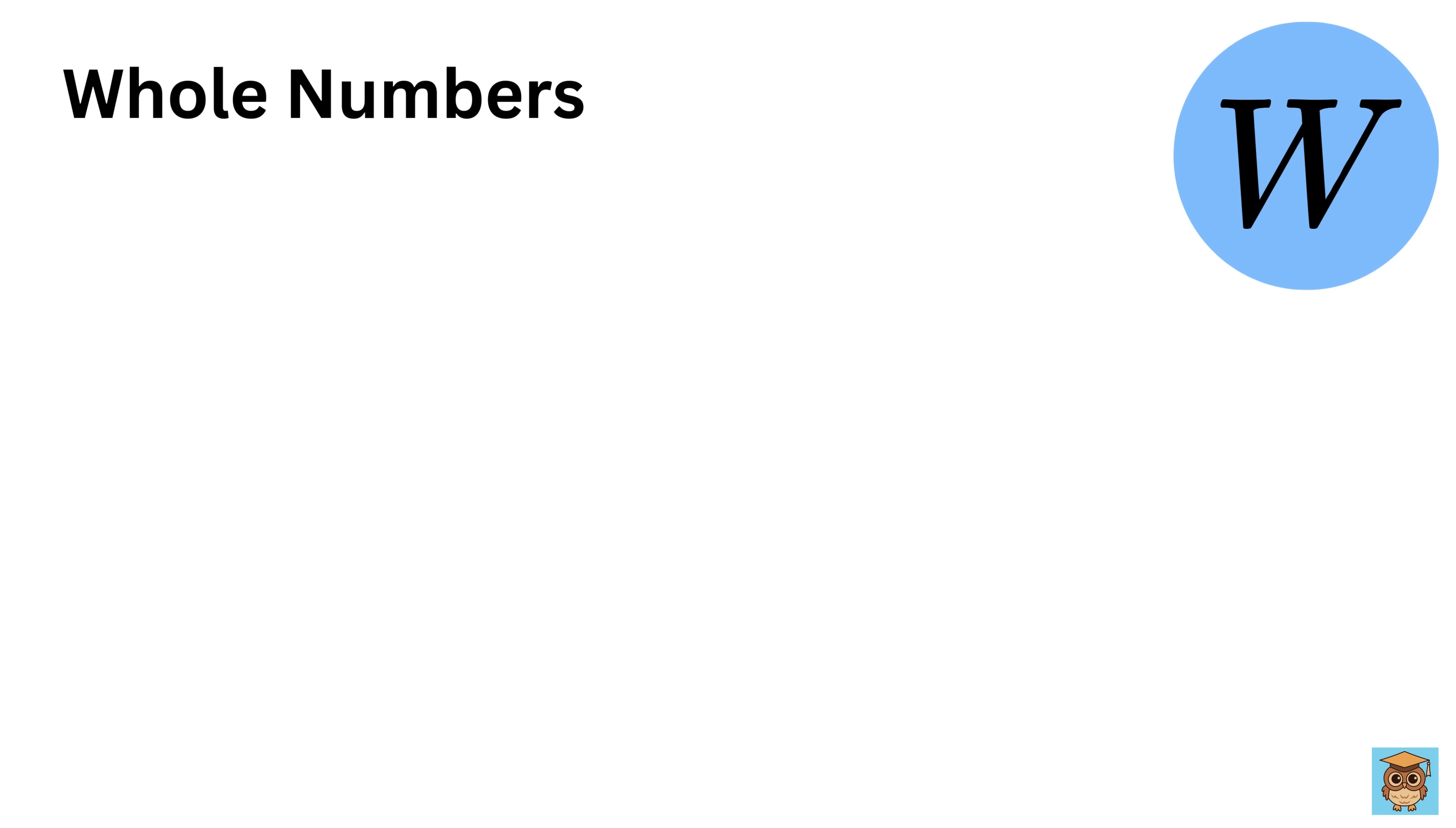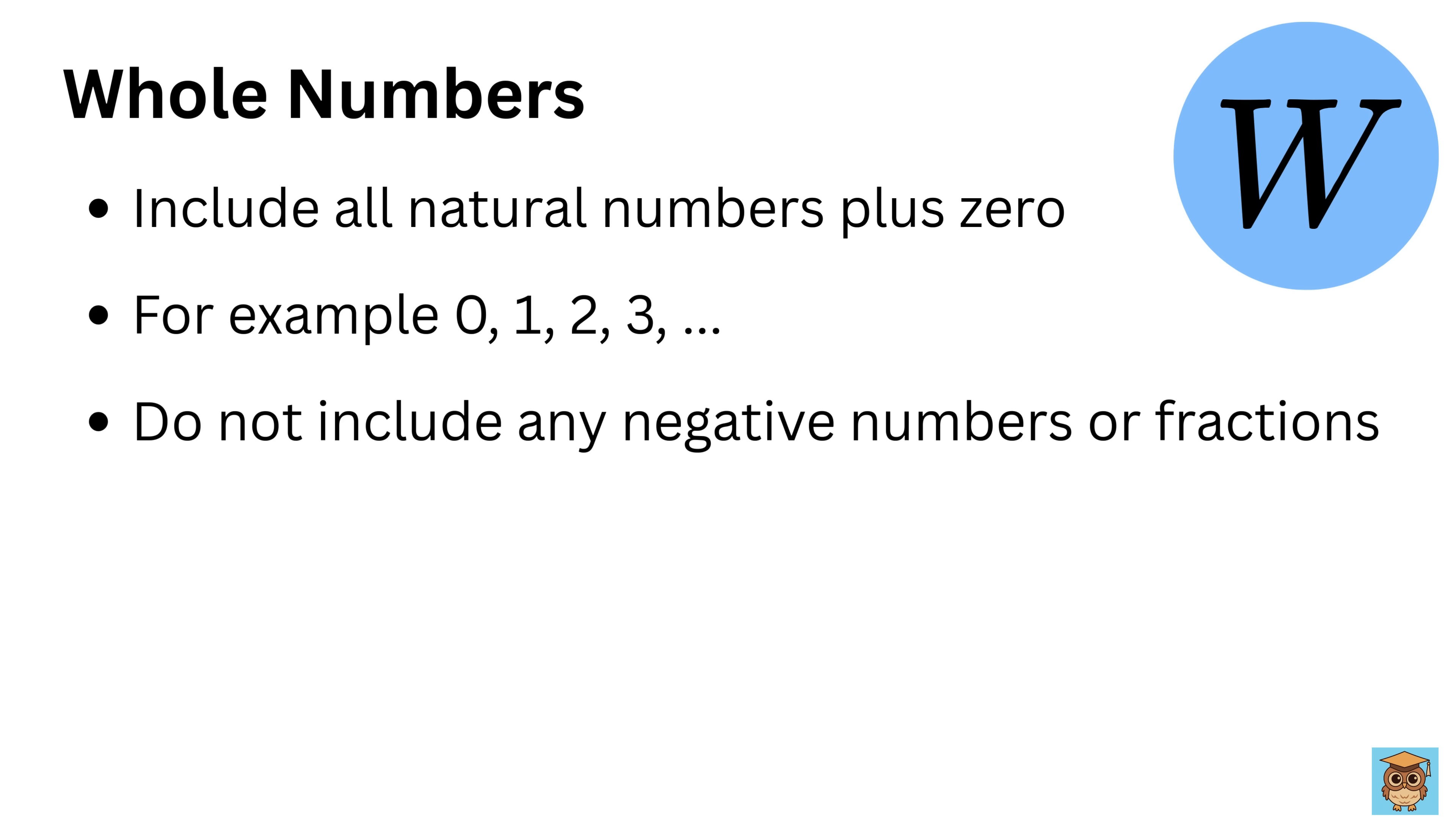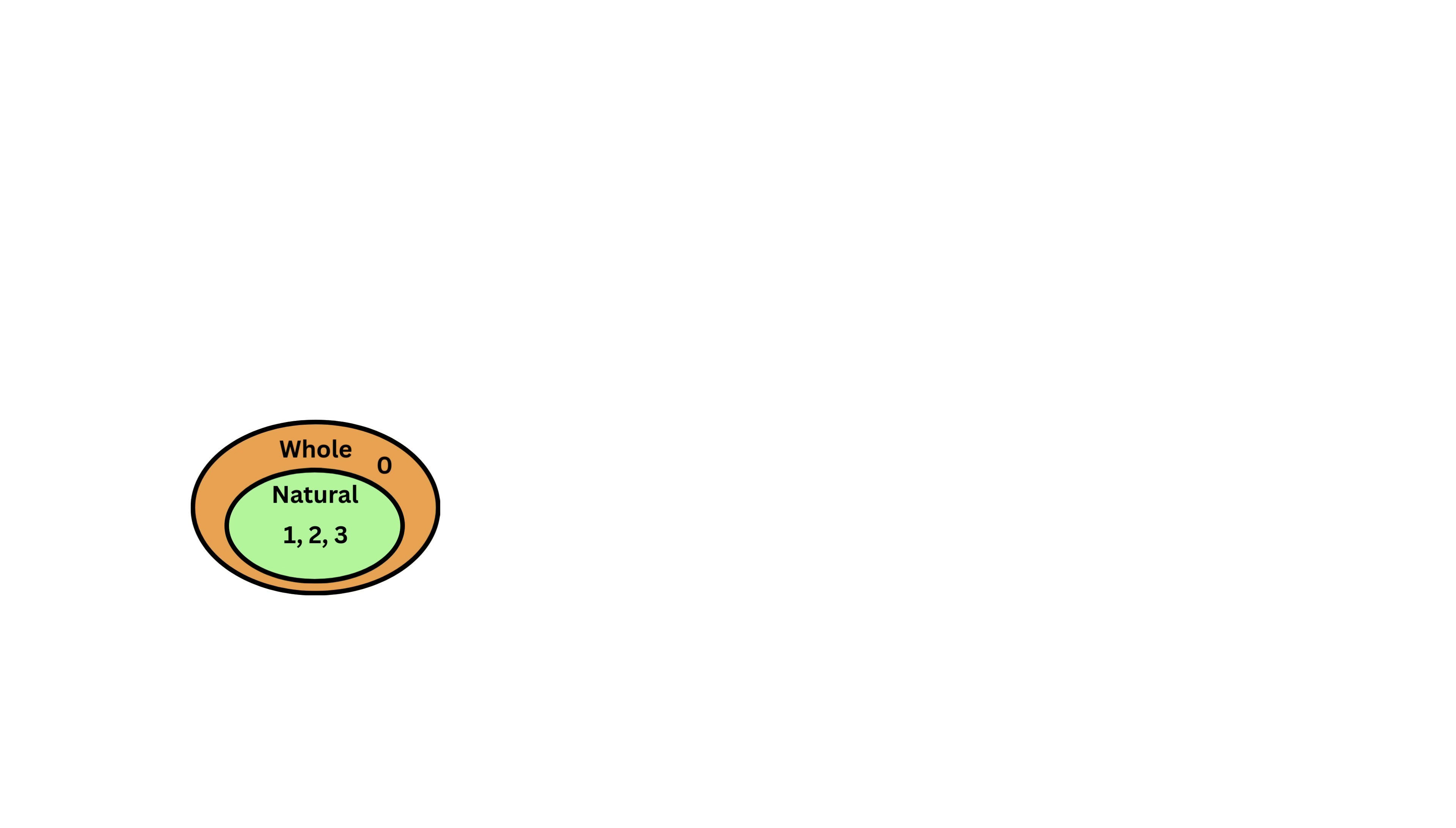Whole numbers include all natural numbers plus 0. This means the set starts at 0 and continues with 1, 2, 3, and so on. They are still only positive or 0 and do not include any negative numbers, fractions, or decimals. They are useful in contexts where 0 must be included in the count.